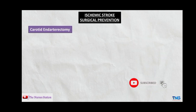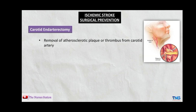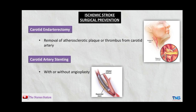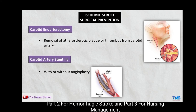For surgical prevention of ischemic stroke, the first procedure is carotid endarterectomy, which involves removal of atherosclerotic plaque or thrombus from the carotid artery. It is indicated in patients with moderate to severe carotid artery stenosis. The second procedure is carotid artery stenting, which can be performed with or without angioplasty. In angioplasty, a catheter is inserted into the artery and threaded to the area of blockade, where a balloon is inflated to open up the artery. If a stent is left at the site to keep the lumen open, this is termed carotid artery stenting.